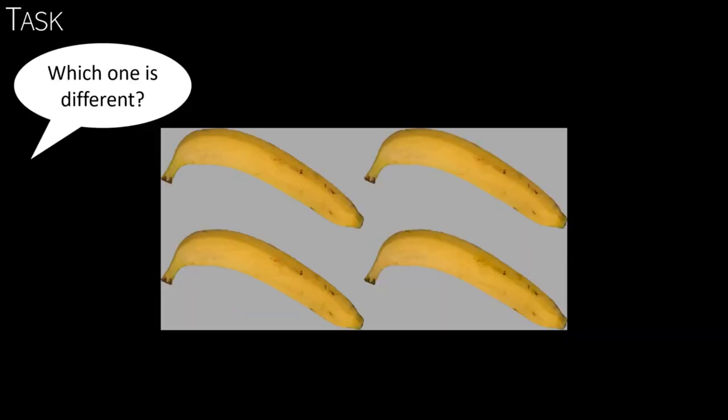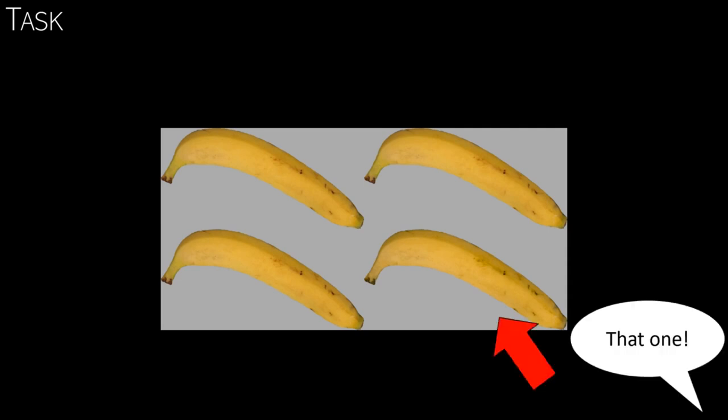To show this, we presented the one hue image together with three original images, and participants in our study had to indicate which one is different from the others. In this example, it is the bottom right one. Now if you find this difficult, there is already some support for the idea that we may represent the object color by the dominant hue.